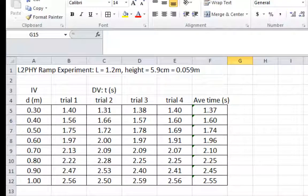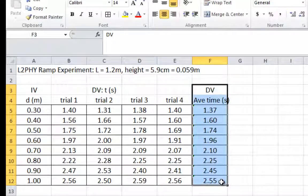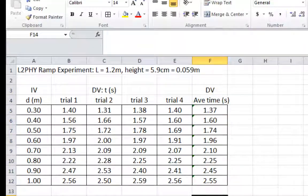We still haven't linearized the data. All we've done is calculate the average. The point of this is to either change the independent variable or to change the dependent variable so that we get a straight line graph.